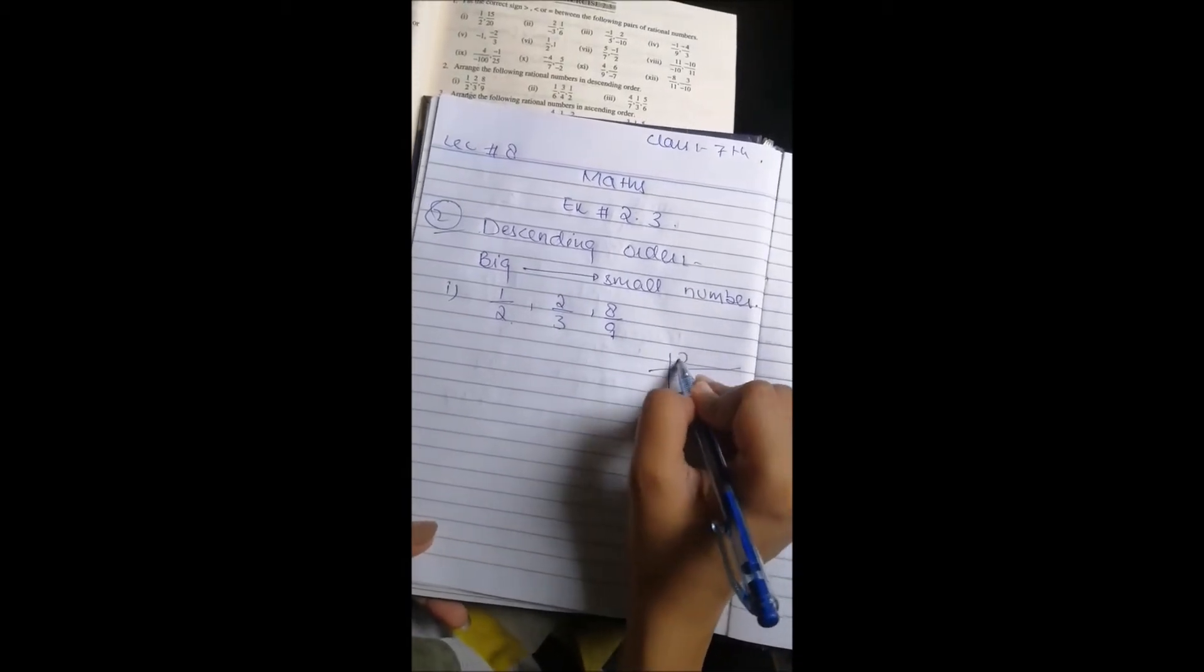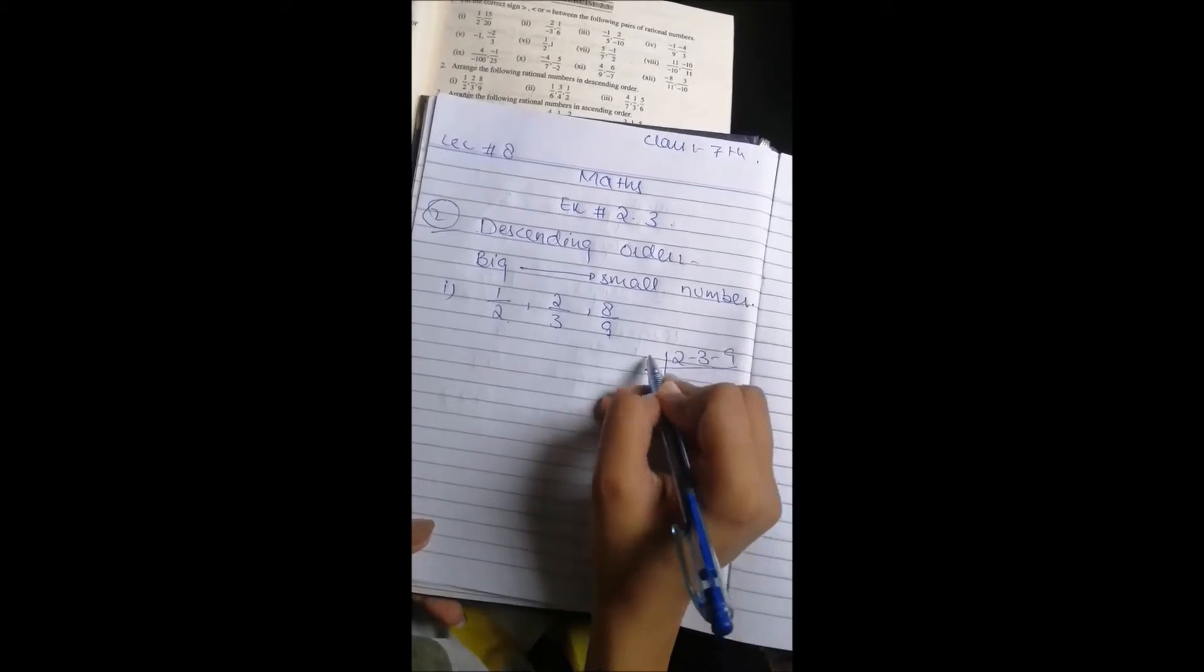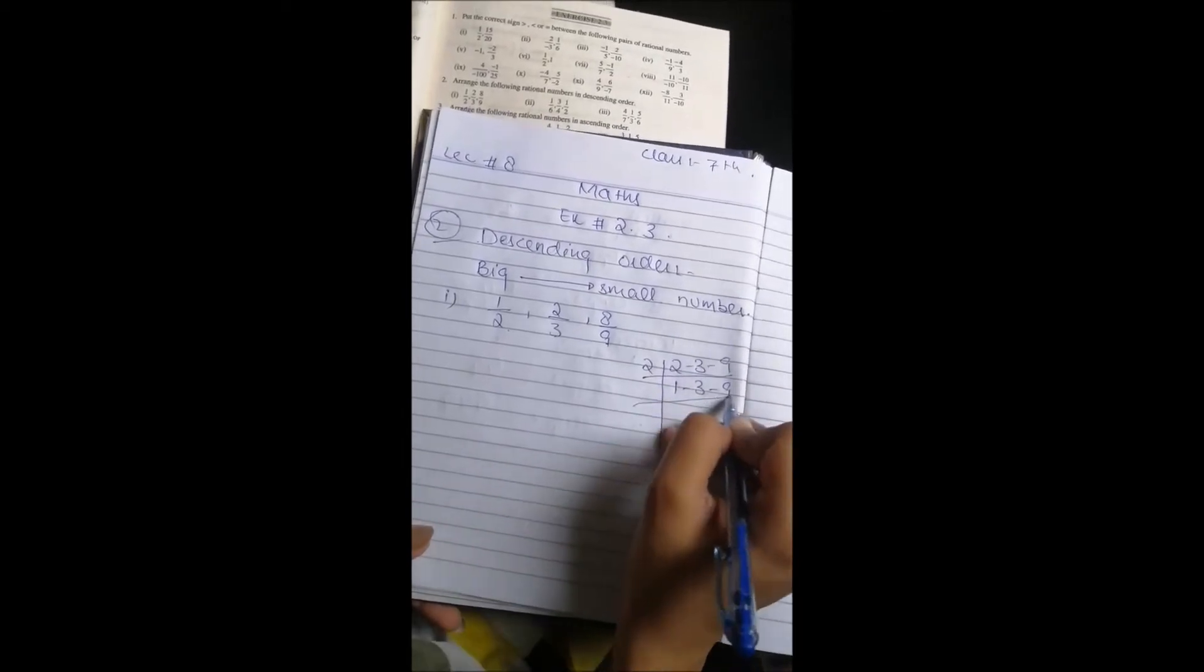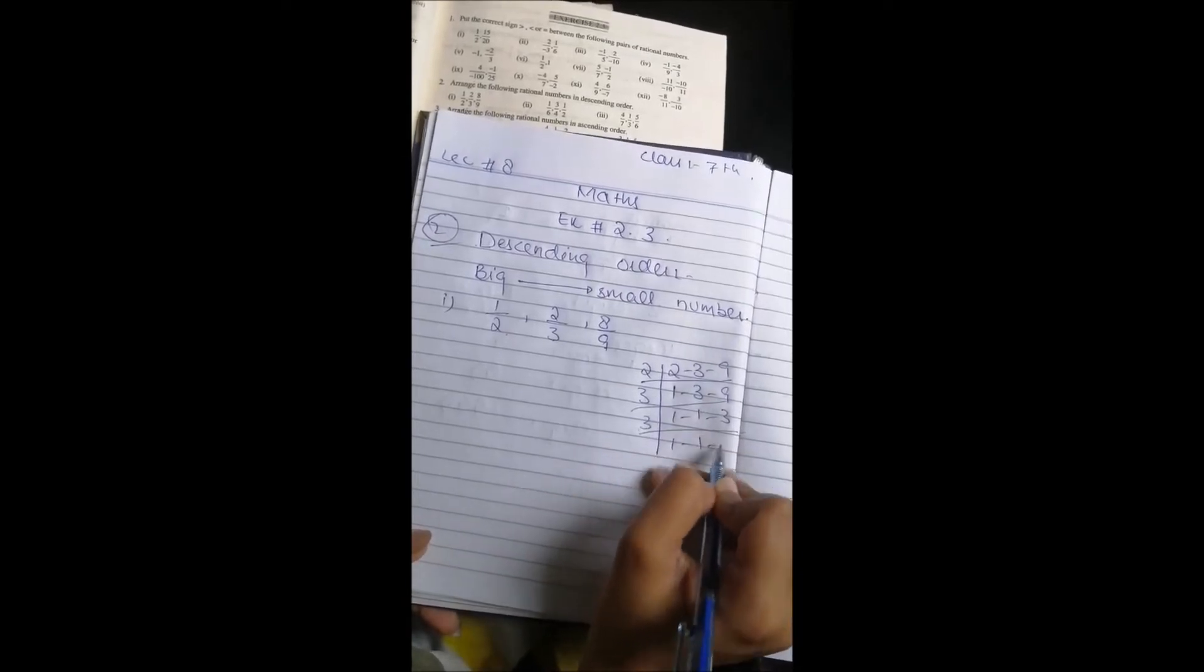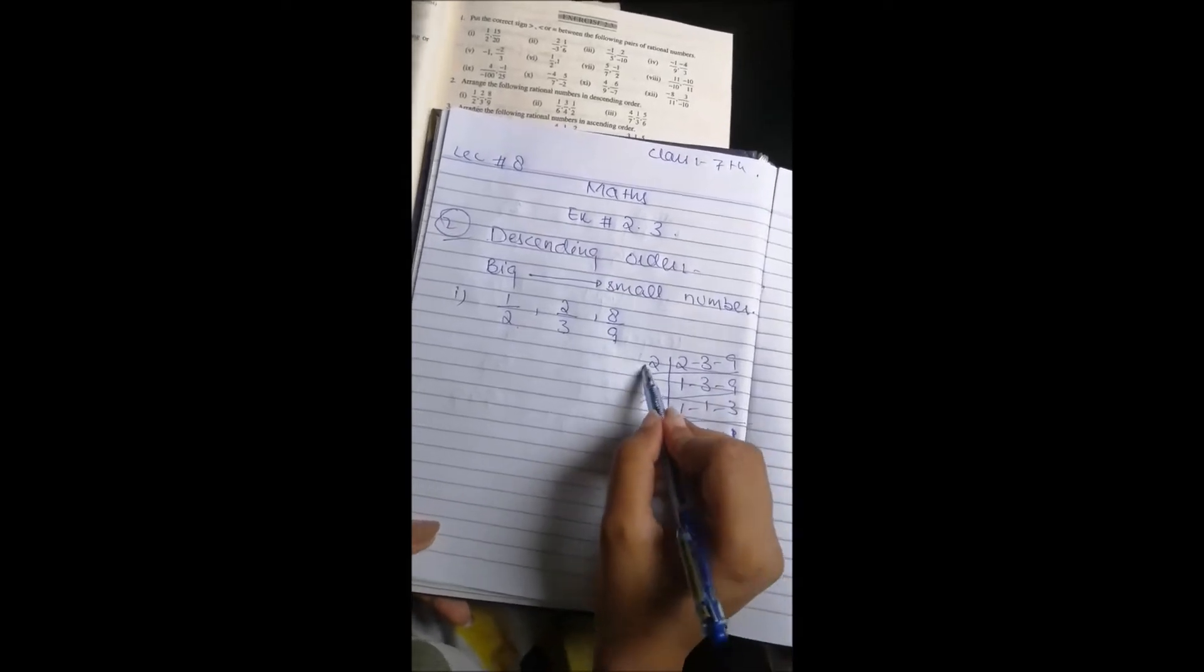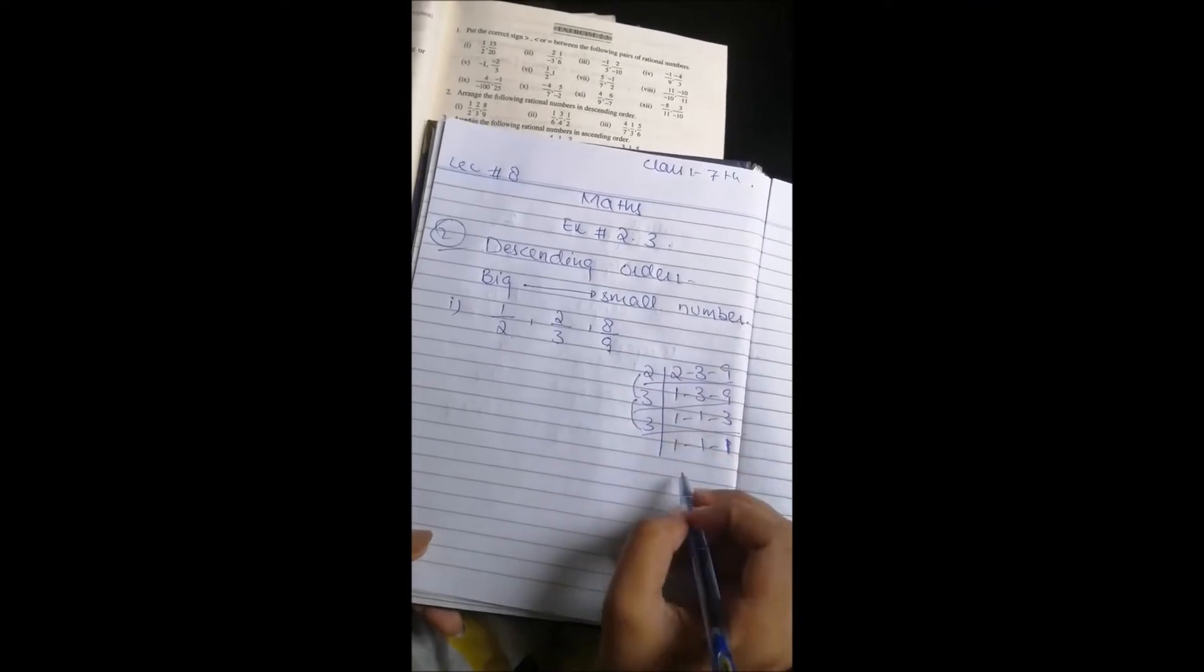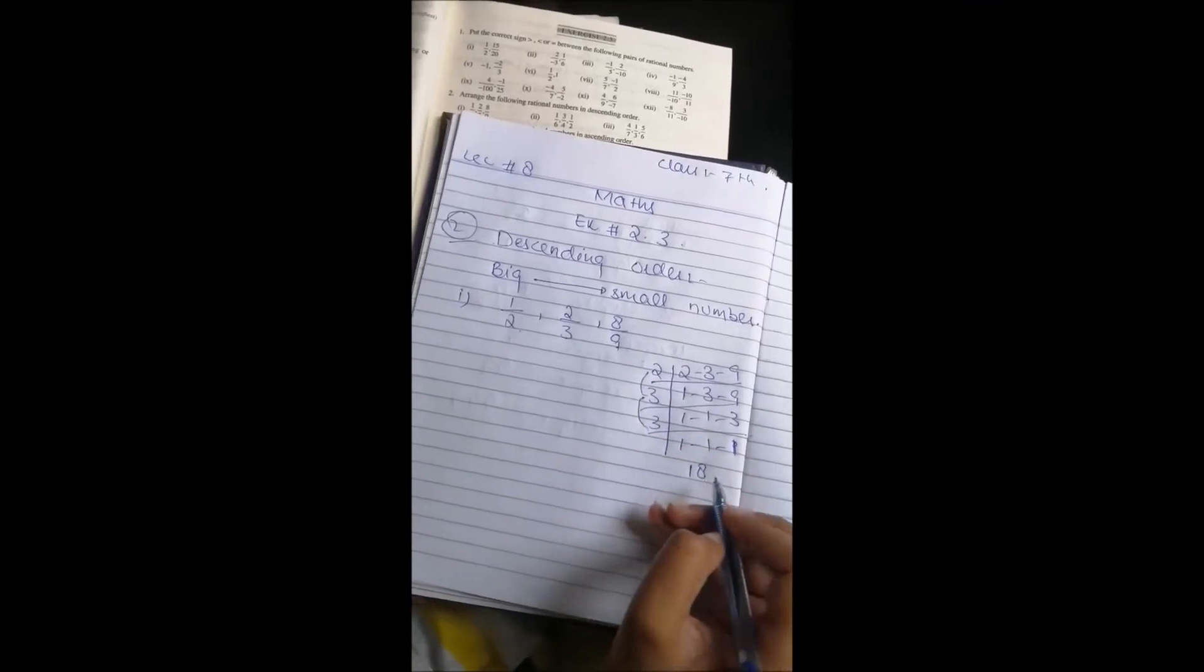Now I am going to take LCM for the denominators. 2, 3, 9. 3 by 9, 3 by 1, 3 by 9, 3 by 1. 2 by 3 is 6, 6 by 3 is 18. You have LCM for the denominator.